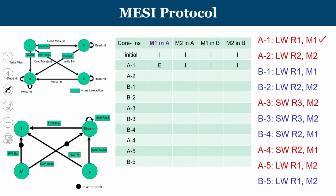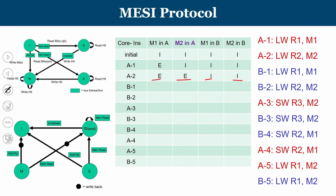The second instruction A2 is a read operation on M2. M2 is in the I state and this is also a first access, so it will similarly transition to the E state. At the end of A1 and A2, B has not executed any instructions, so M1 and M2 in B remain in the invalid state, while M1 and M2 in A are in the Exclusive state.